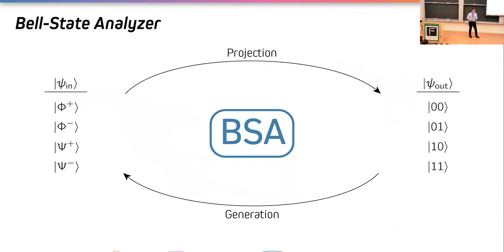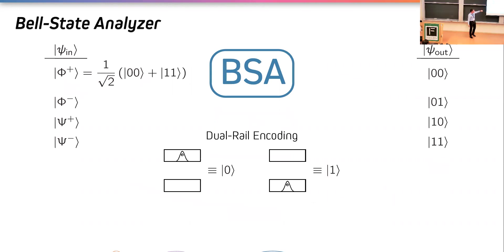The most important part of this scheme is the Bell state analyzer. By definition, this component is designed to project the maximally entangled Bell states to the computational basis for measurement, and more specifically it allows you to perfectly discriminate between all four Bell states. If you run it in reverse you can also use it to generate Bell states. These states are written in terms of qubits, and one way we can encode photonic qubits is with dual rail encoding.